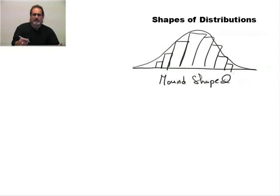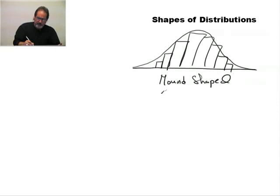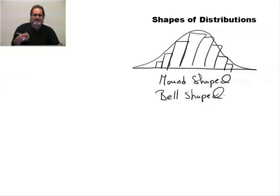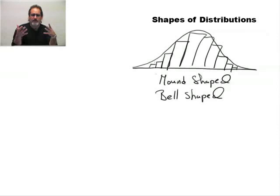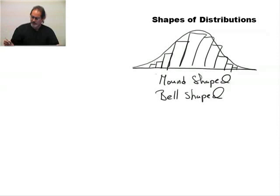More commonly, if we have a distribution that looks mound-shaped, we refer to it as being bell-shaped, or at least approximately bell-shaped. The shapes of these distributions are kind of important, because when you look at the shape of the data, that will quite often direct you in the right direction to continue your analysis.